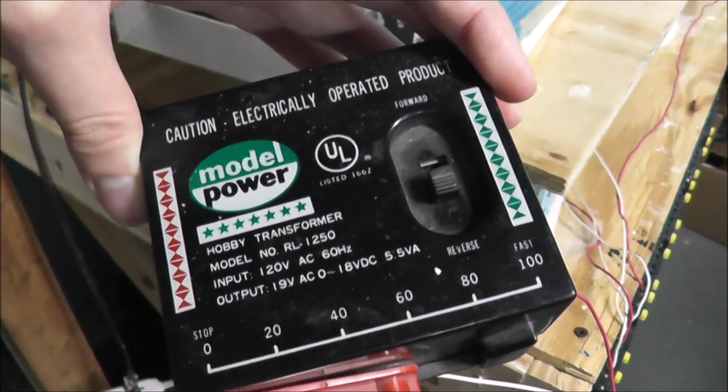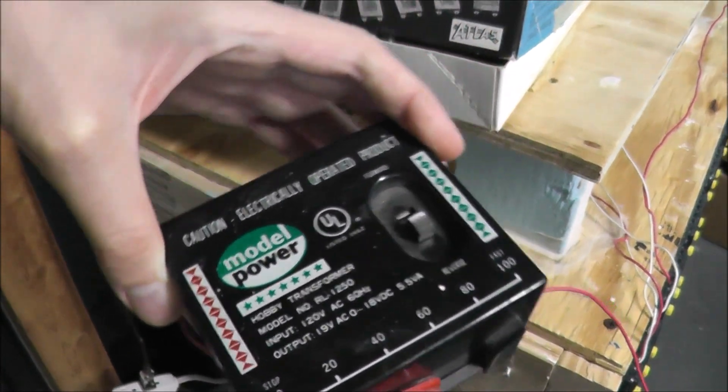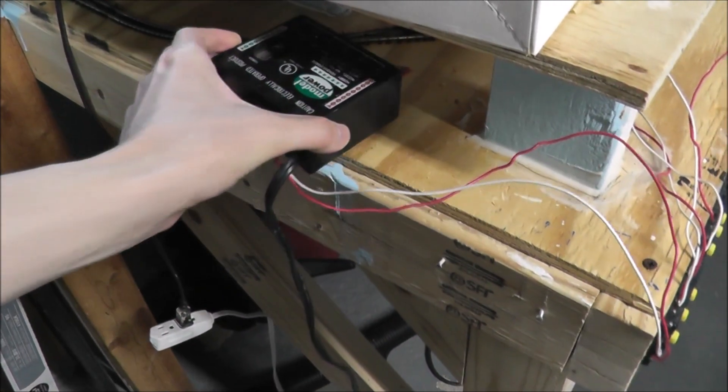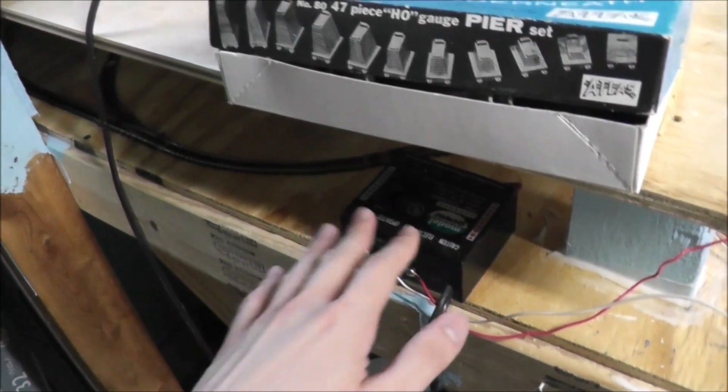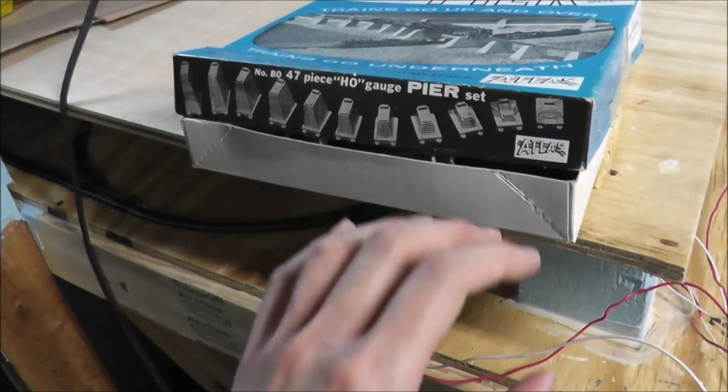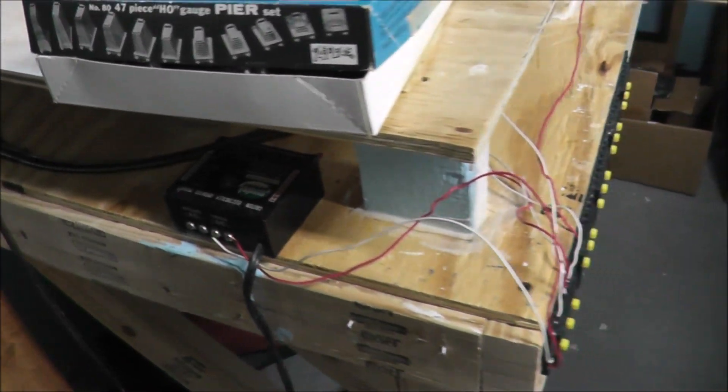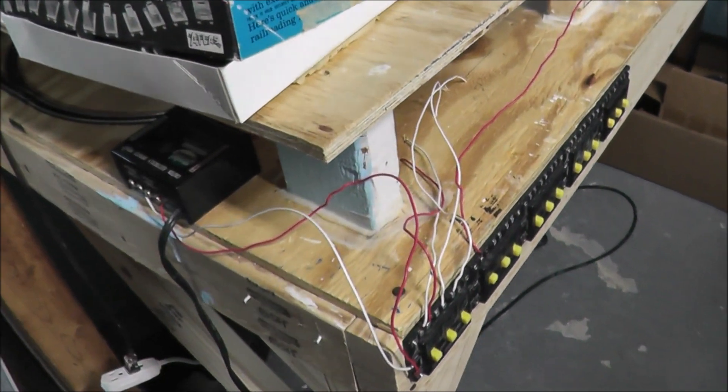So there isn't really much of a speed difference. And as a result, I think that what we're going to be doing is buying a new Bachmann power pack instead of using this one just because, you know, you want to have that speed contrast when filming and just running your engines in general.